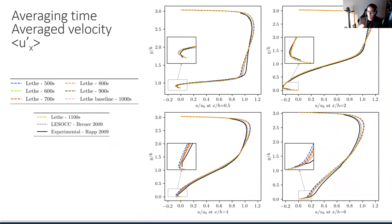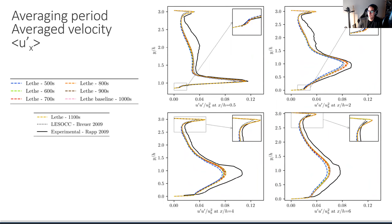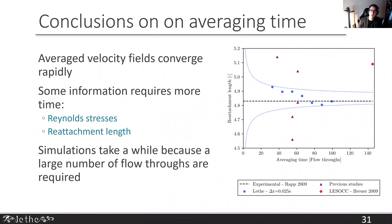For effective averaging time, the picture is simpler. Above about 500–600 seconds of averaging, the results — both average velocity and Reynolds stresses — become independent of the averaging time. If we average over 1,000, 1,100, or 1,200 seconds, the results don't change. Average velocity converges relatively quickly; it takes a bit more time for Reynolds stresses and the reattachment length. Simulations take a long time not just due to mesh resolution but because of the large number of flow-throughs required — we need up to 100 flow-throughs — but it's very interesting to see we can achieve convergence that's independent of simulation length.